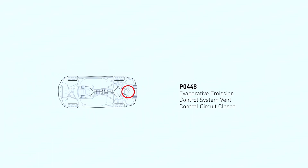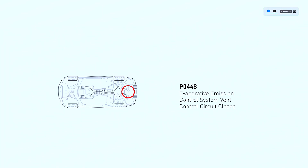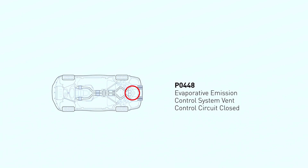So, what exactly does this mean? The P0448 code triggers when the engine control module, or ECM, detects an issue with the EVAP system's vent valve. This valve is crucial for releasing fuel vapors from the fuel tank to prevent harmful emissions from escaping into the atmosphere.